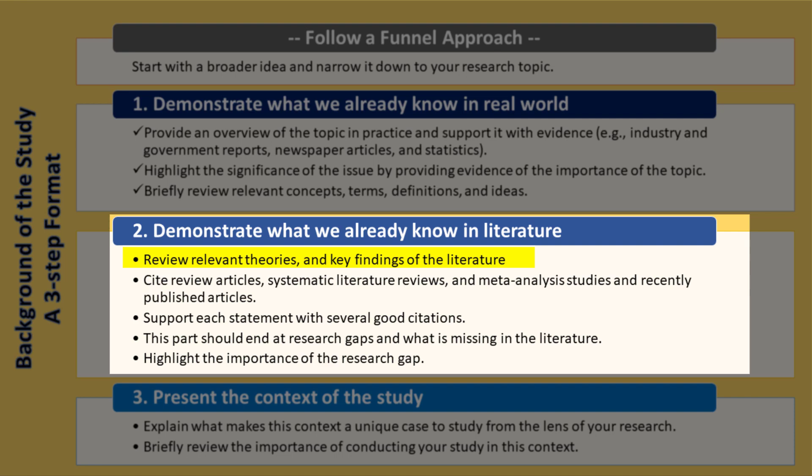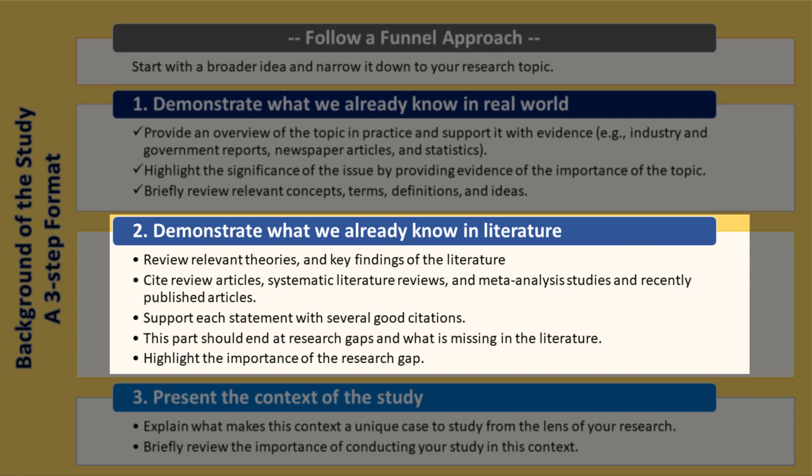Then in the second block of your background of the study, review relevant theories. This is the part where you discuss what we know in the literature. You need to review key findings and demonstrate that you are aware of the current body of knowledge. Citing review articles, systematic literature reviews, meta-analysis studies, and recently published articles are strongly recommended. Show that you have done a comprehensive literature review and support each statement with several good citations. Your review should be very brief and concrete, as you will comprehensively review the literature in the literature review chapter of your work.